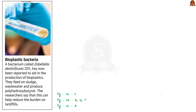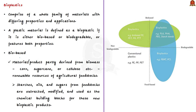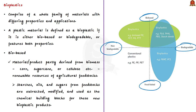This snippet article talks about a bacterium called Zobellella dentrificans ZD1 that has been reported to aid in the production of bioplastics — referred to as the bioplastic bacteria. Bioplastics are not just one single substance; they consist of a whole family of materials with differing properties and applications. A plastic material is called a bioplastic if it is biobased, biodegradable, or has both properties. Biobased means the material is partly derived from biomass — such as corn, sugarcane, or cellulose — making biobased bioplastics plastics made from renewable resources of agricultural feedstocks.